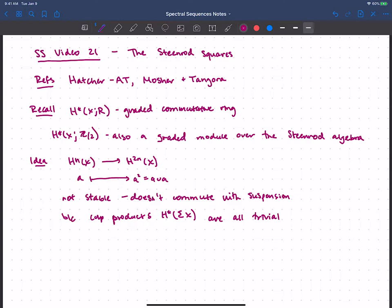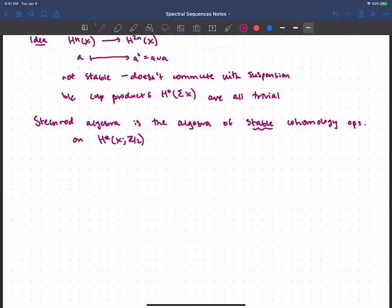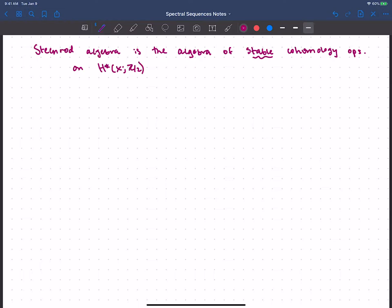So what we're interested in is something that we can do stably. Ultimately, I'm thinking a little bit about spectra here. But the Steenrod algebra is going to sort of take this idea and give us an algebra, really the algebra, as we'll see, of stable cohomology operations. And for now, let's just say on the cohomology of X with mod 2 coefficients. This is going to be made of approximations to this cup square, but stably. So one way to meet the Steenrod algebra is through a bunch of axioms.